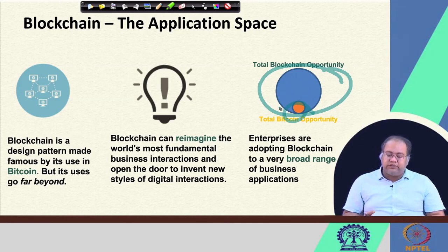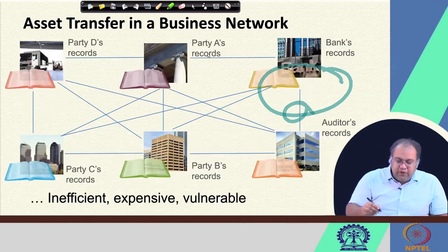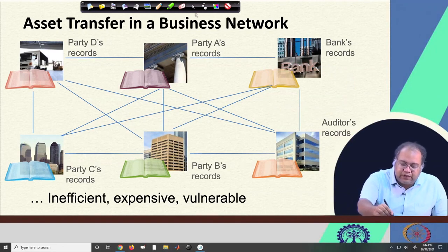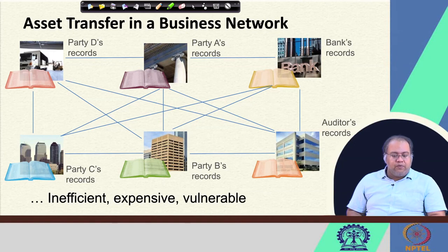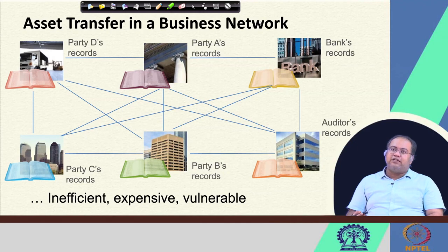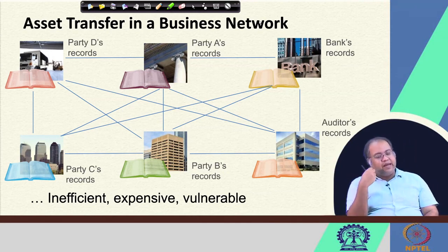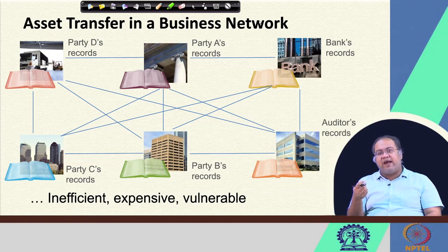Enterprises are adopting blockchain for a very broad range of business applications. Looking at one particular application — asset transfer in a business network — consider the auditing process with multiple parties: party A, B, C, and D, each maintaining their own records. These are financial transaction records typically maintained by the banks involved with individual parties. Auditors need to access records from the bank and from individual parties, then manually validate them for auditing purposes.